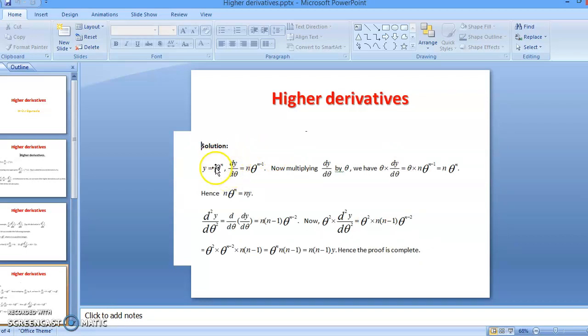So if we differentiate y with respect to θ, as in our basic differentiation, we have n multiplied by θ^(n-1). Now, multiplying dy/dθ by θ, we are going to have θ times dy/dθ, which is θ times nθ^(n-1). So by the time we multiply θ by nθ^(n-1), we have nθ^n. Hence, nθ^n is equal to ny, which is what we are asked to obtain as the first question.